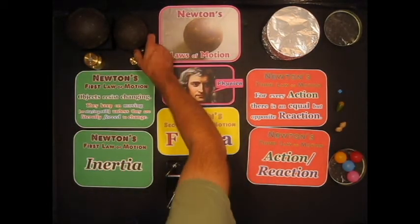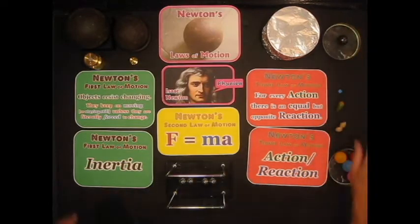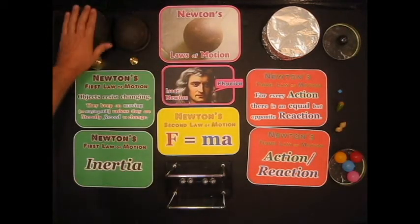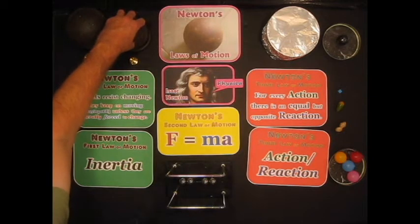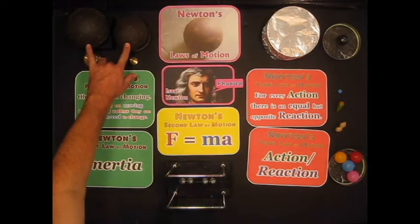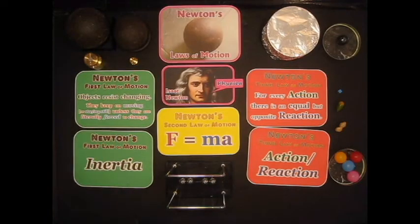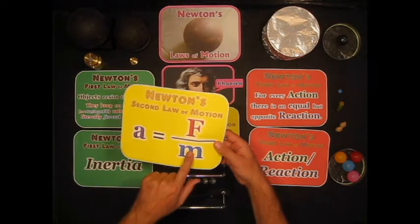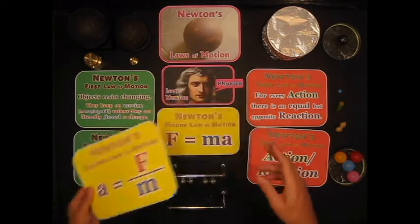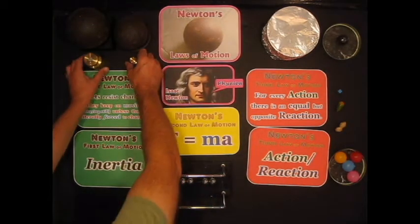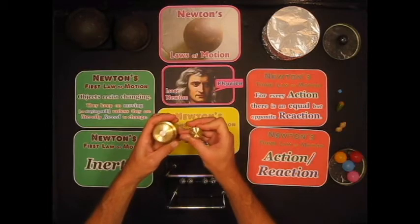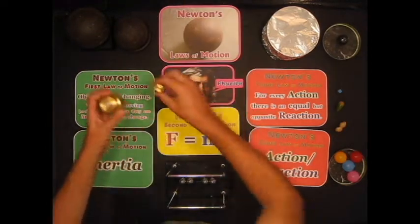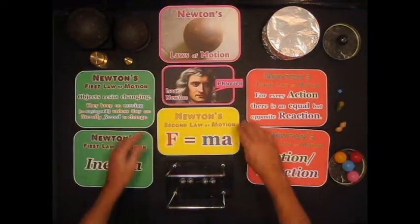So if you put the same force onto two different masses, this one's more massive, big shot put, this one is less massive, small shot put. Put the same force on those two objects, well, the one with a lower mass is going to have a greater acceleration. And the same thing goes with these, if you put the same force on these two objects, then the one with the lower mass would have the greater acceleration.